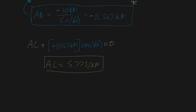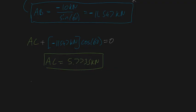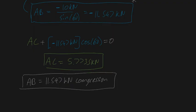Let's summarize our results. We know AB, the internal force in member AB, is equal to 11.547 kilonewtons in compression. And AC, the internal force in member AC, is 5.7735 kilonewtons in tension. That is your answer.